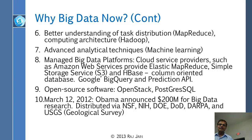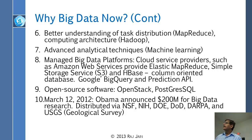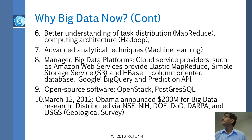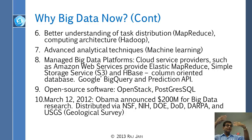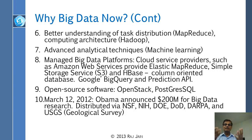Advances in networking made cloud computing possible. Better understanding of task distribution — that is MapReduce and Hadoop — which we didn't know before, is how we can analyze big data now. Advanced analytical techniques, including machine learning, were not available before. Big data platforms from cloud providers like Amazon provide everything you need — Hadoop, MapReduce — so you can contract it all out cheaply.